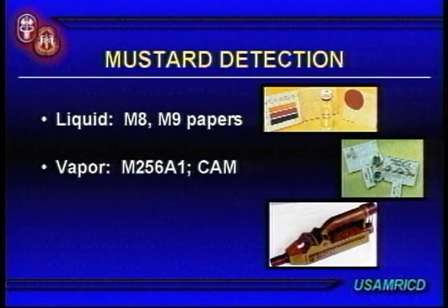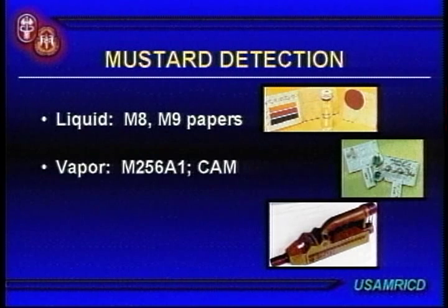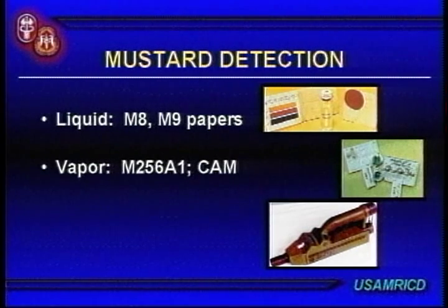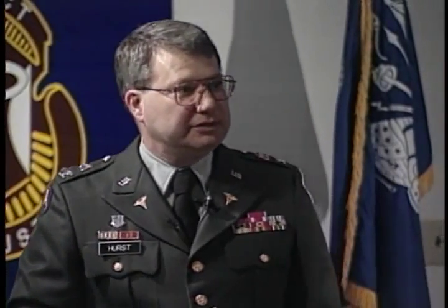The CAM detects nerve agents and vesicants including mustard. It will also pick up lewisite, but it will read it out as mustard.